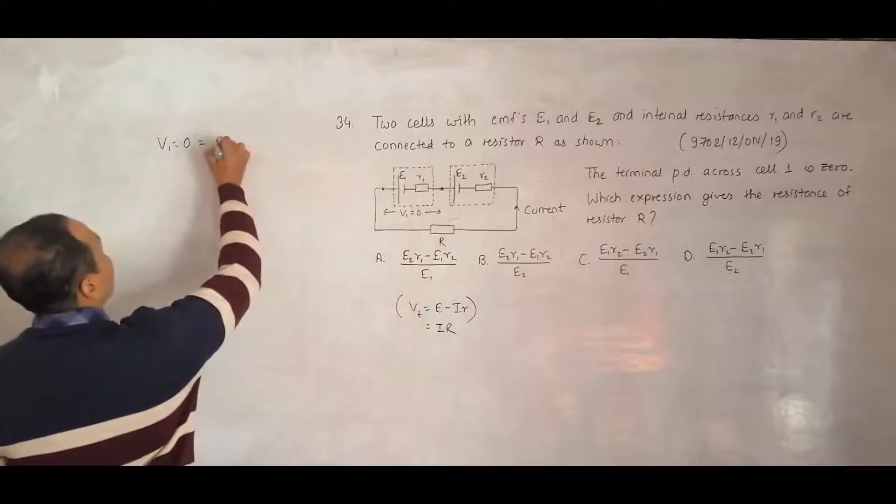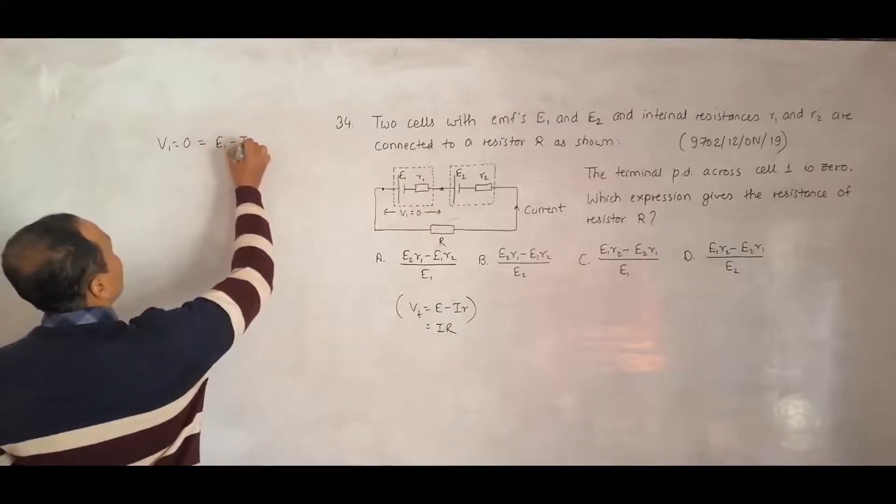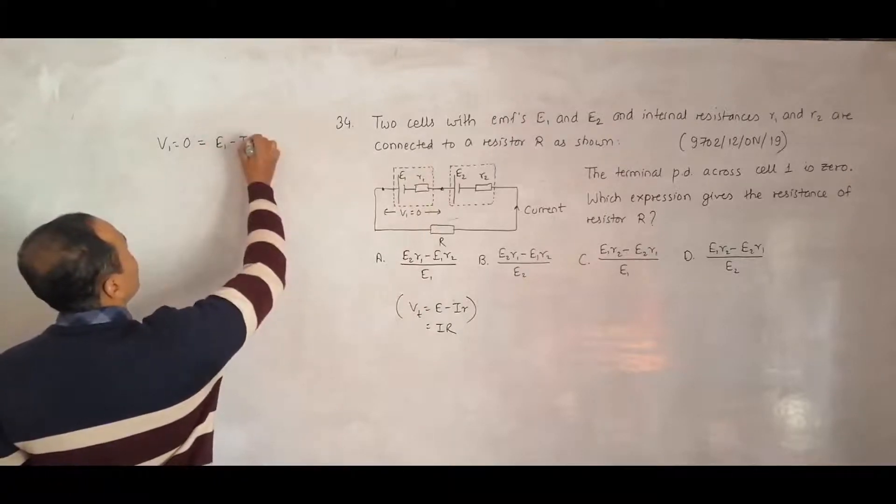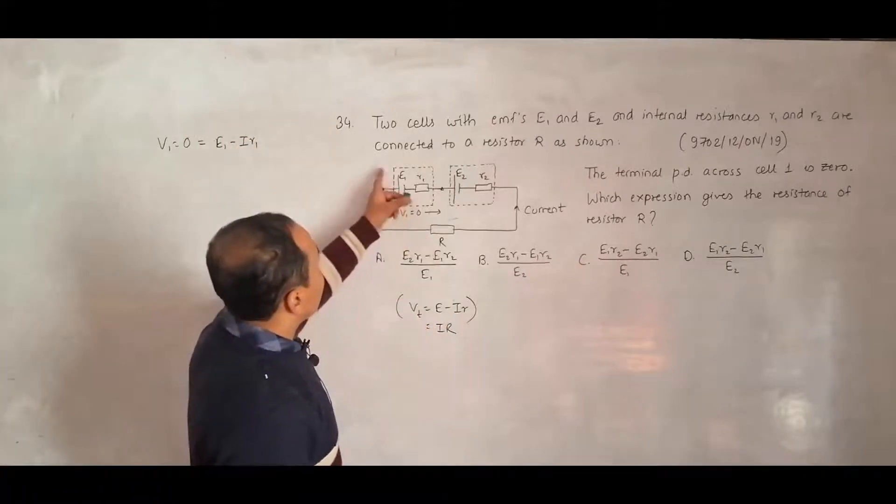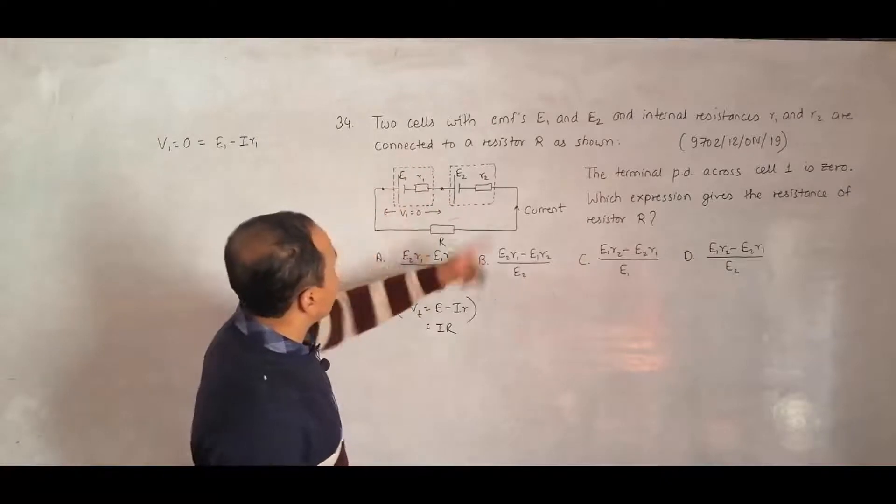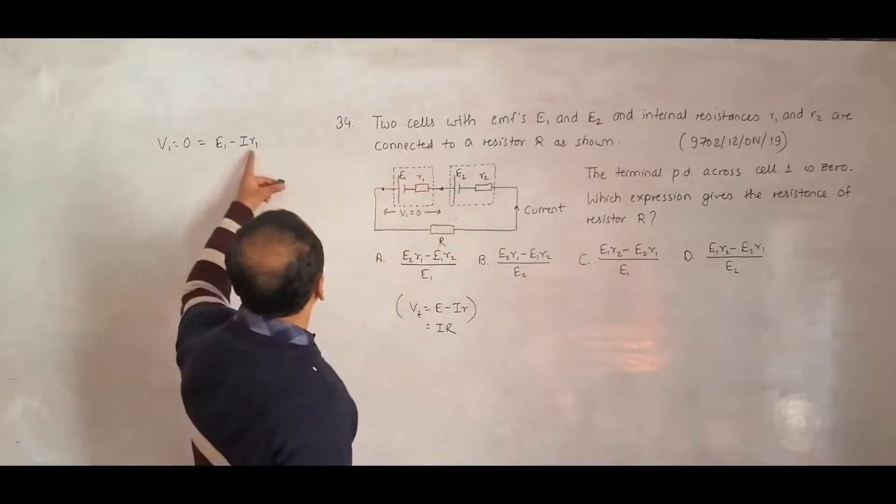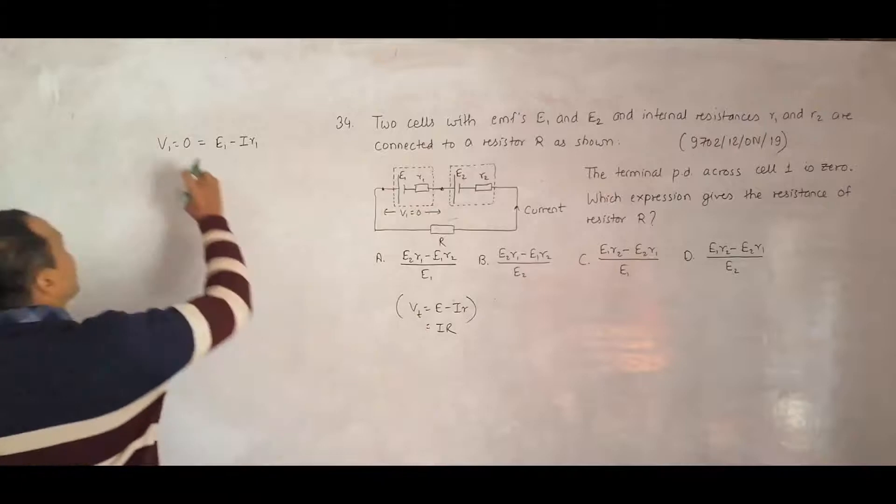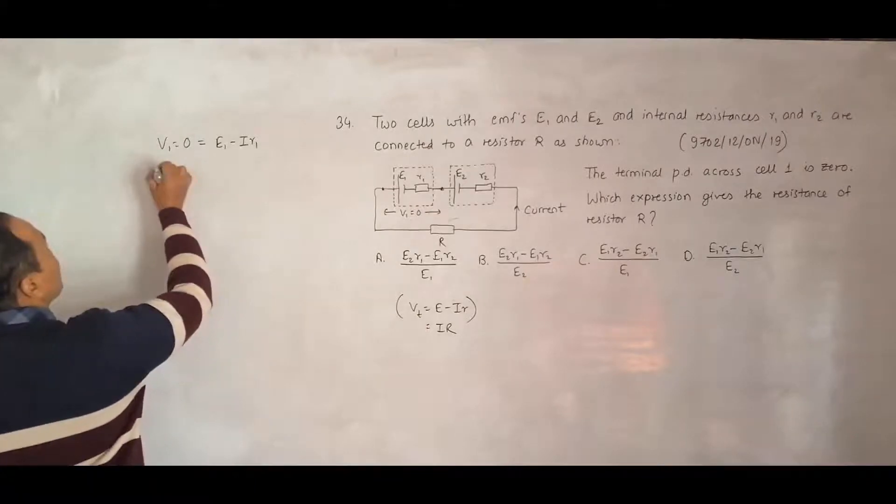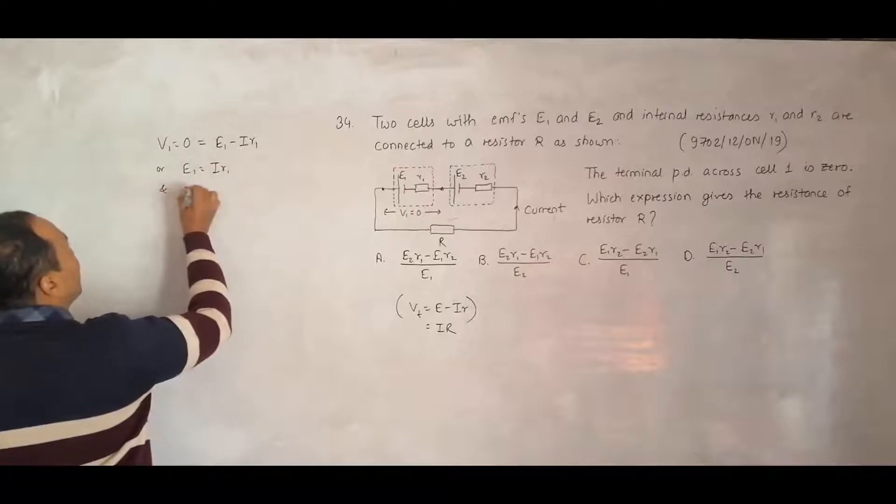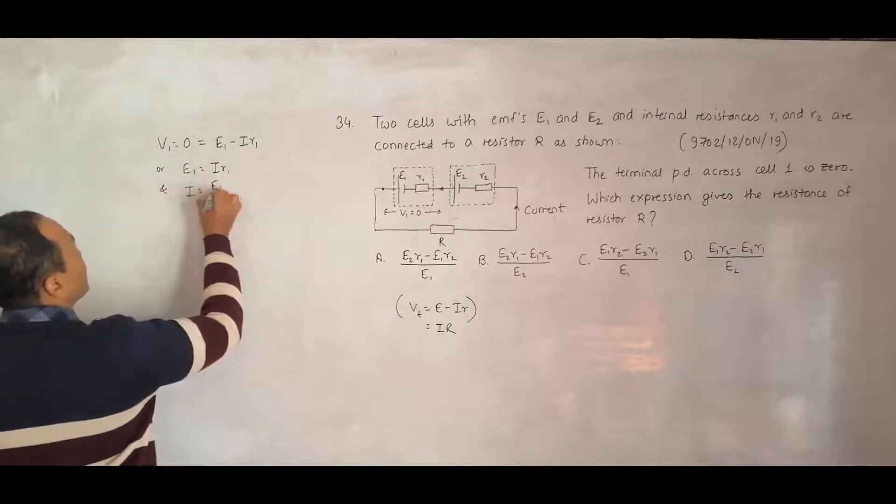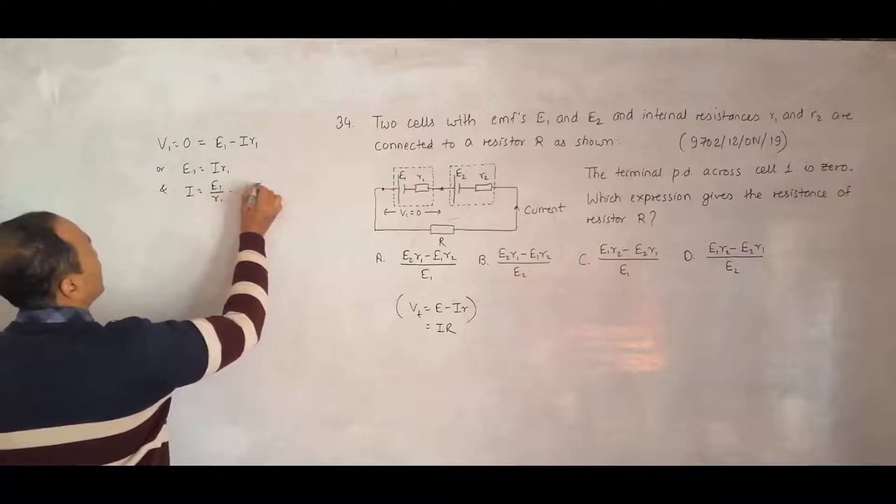This V1 is also equal to E1 minus current in the circuit into its internal resistance. I am applying the same thing here. V1 equals its EMF minus the current into its own internal resistance. From there we have 0 equals this much, which gives me E1 equals I into R1.